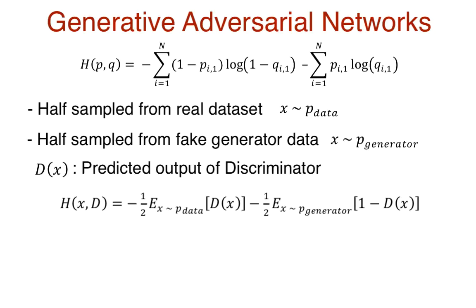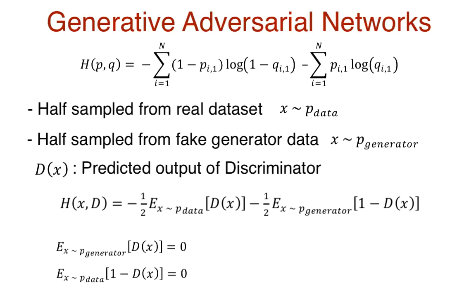If you find it hard to remember which term of the expectation is distributed from the real data and which term is from the generator, take a look at the D(x) term — this is either 0 or 1 depending on whether it predicts the data as fake or real. Consider the first term with just D(x): it contributes to the loss function when it is not 0, or when it equals 1, and this happens when the data is real. The reverse is true for the next term, 1 minus D(x): this term contributes to the loss function when it is 1, or when D(x) equals 0 — in other words, when the data is fake, sampled from the generator. The expectation of 1 minus D(x) when x is sampled from real data would be 0 and hence isn't included.